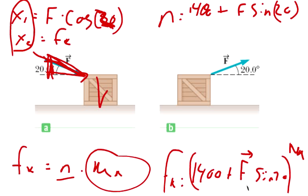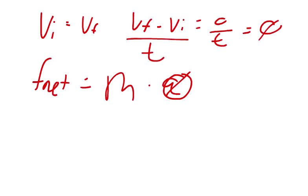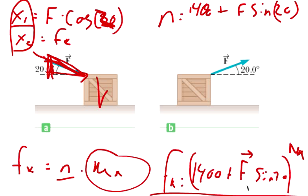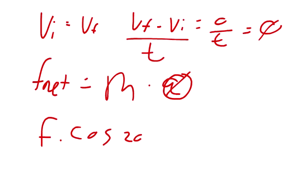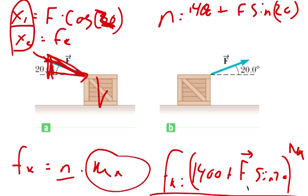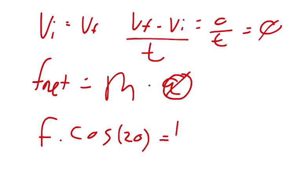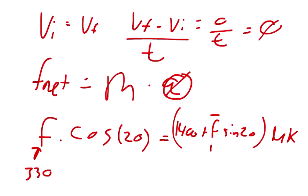So that means the force acting in the x1 direction should be counterbalanced by the force acting in the x2 direction. So we can say that force times cosine 20 equals, is the same in magnitude, as 1400 plus the force sine 20, times coefficient of kinetic. At this point, all you got to do is putting your knowns. So the force is 330, and then it goes in here again, 330, and then you can do your math and solve for this coefficient of kinetic friction.